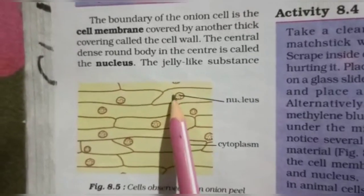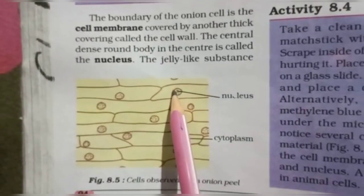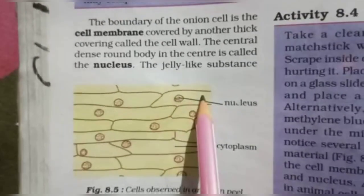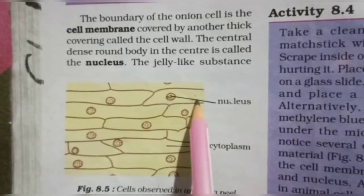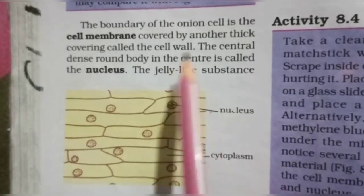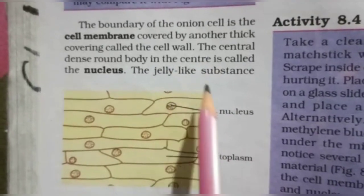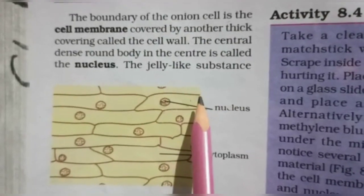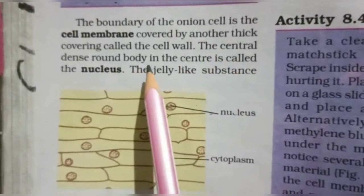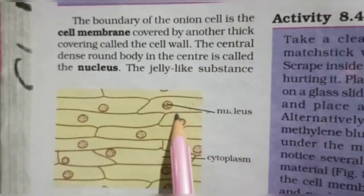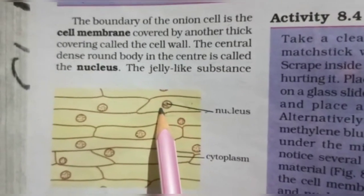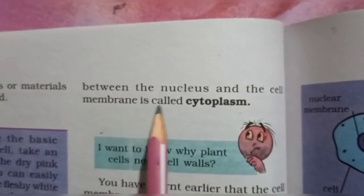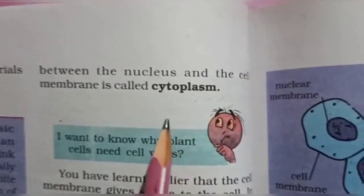The onion cell is shown here. The nucleus is visible inside it, shown within the cytoplasm, and the border shown is the cell membrane. The cell wall can also be seen around it. The central dark body in the center of the cell is called the nucleus. The jelly-like substance between the nucleus and the cell membrane is called cytoplasm, which is shown here in yellow color.